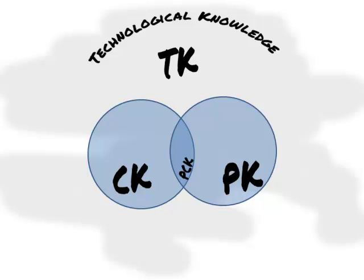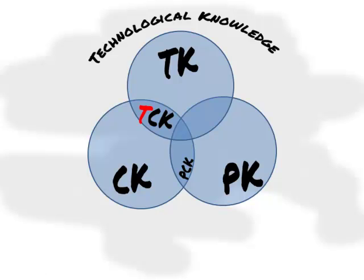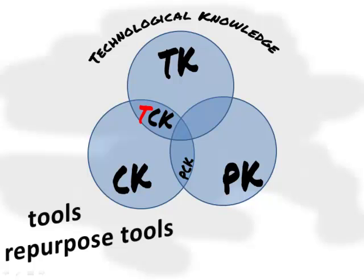In 2006, Mishra and Koehler modeled this knowledge as an additional circle in the Venn diagram to illustrate its influence. They described the overlap of Technological Knowledge with Content Knowledge as TCK, or Technological Content Knowledge. Teachers now had to have knowledge about the technology tools that were part of the discipline or content area — for example, using probes in science or databases to collect data. Teachers also needed to understand how to repurpose technology tools for use in other content areas, such as using databases in math or probes in social studies.